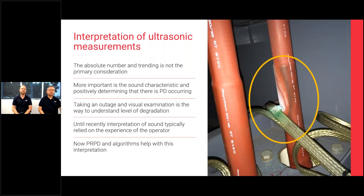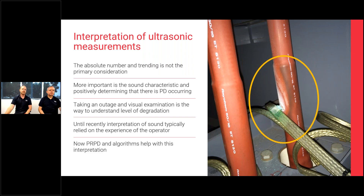When interpreting ultrasonic measurements, the absolute amplitude number and its trending are not the primary consideration. The primary consideration is: are we detecting PD and where is it occurring? We record the amplitude and the phase plots, apply the instrument algorithms, and once PD is confirmed, the best course of action is to take a shutdown on that asset and visually examine where the PD is occurring — that tells you how long you have before failure.